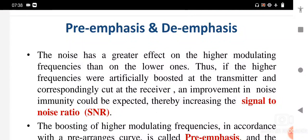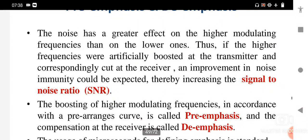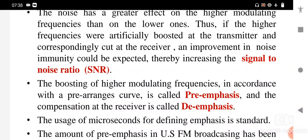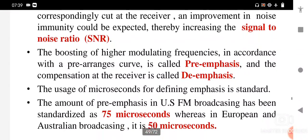This can be done by increasing the frequency deviation delta-f and increasing the amplitude of the modulating signal at higher modulating frequencies. If higher frequencies are artificially boosted at the transmitter and correspondingly cut at the receiver, an improvement in noise immunity can be expected, thereby increasing the signal-to-noise ratio. The boosting of higher modulating frequencies according to a pre-arranged curve is called pre-emphasis, and the compensation or cut at the receiver is called de-emphasis.